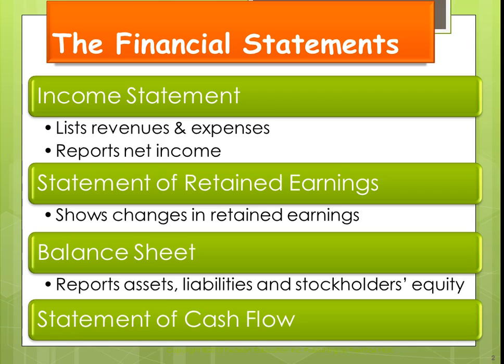That is the balance sheet, which reports assets, liabilities, and stockholders' equity. Assets must equal liabilities and stockholders' equity, so this balance sheet should balance. The last statement is the Statement of Cash Flows. We will not cover this right now, but we will cover it in future chapters. It explains the difference between the beginning cash and the ending cash — you look at what caused the change.